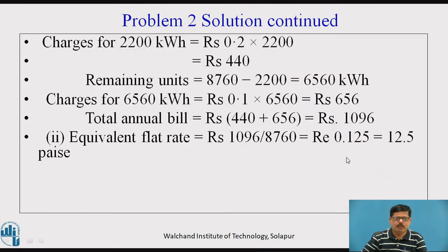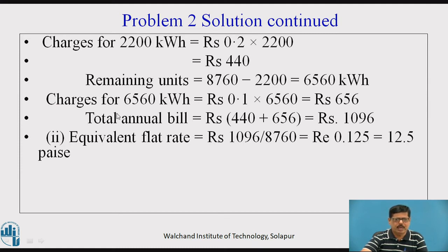Therefore, charges for 2200 kWh will be equal to Rs. 0.2 into 2200, so Rs. 440. The remaining units will be 8760 total units minus 2200, which comes out to be 6560 kWh. For these units, the tariff is given as 0.1 rupees, that is 10 paise per unit. So charges for 6560 kWh will be 0.1 into 6560, which comes out to be Rs. 656. Therefore, total annual bill will be Rs. 440 plus Rs. 656, coming out to Rs. 1096.